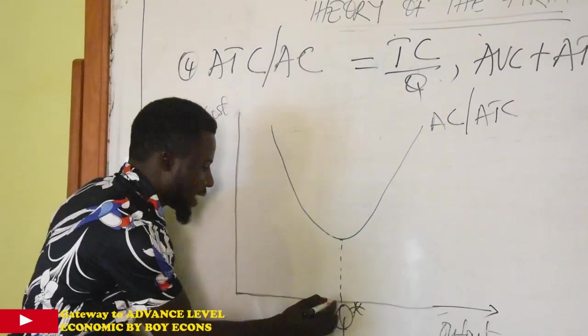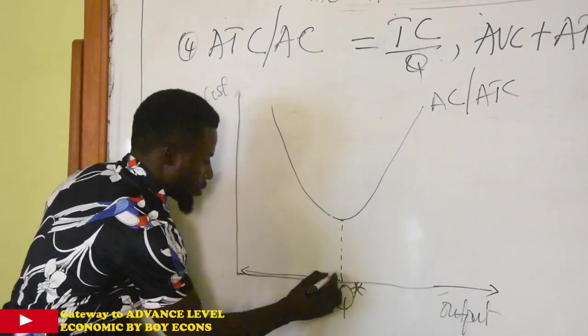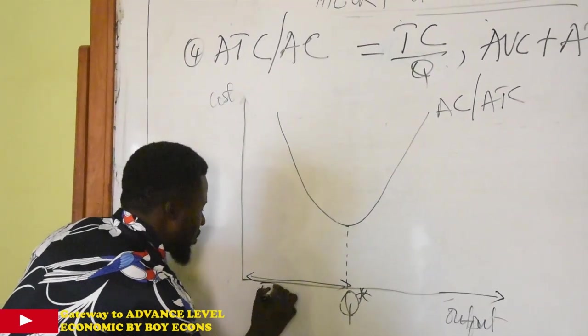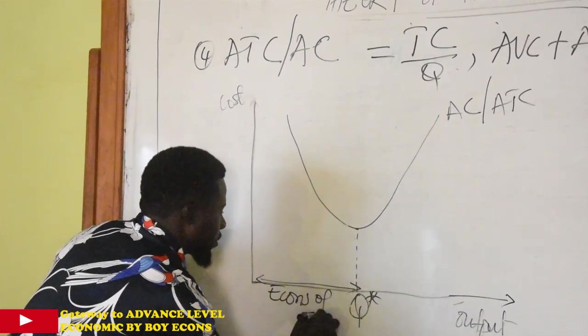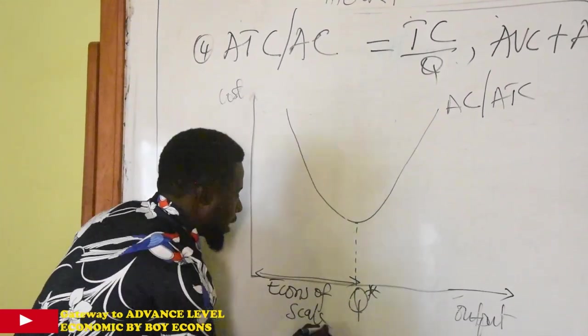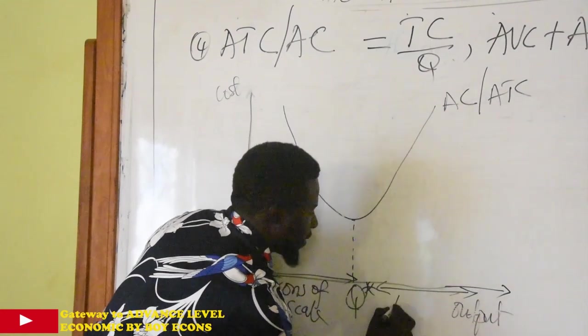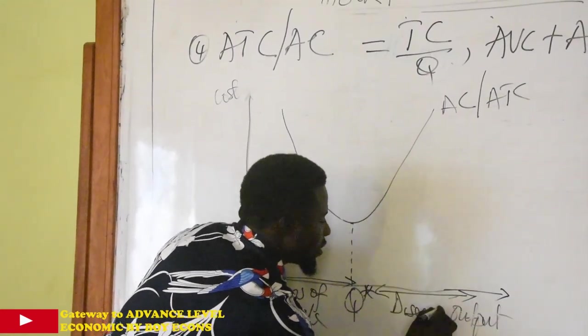So to the left of the technical optimal output, to the left, we have economies of scale. And then to the right, we have dis-economies of scale.